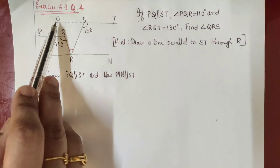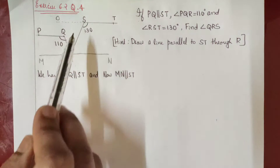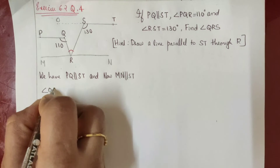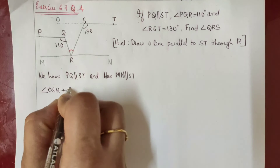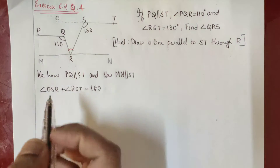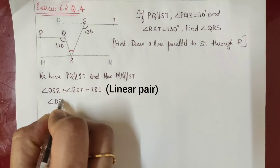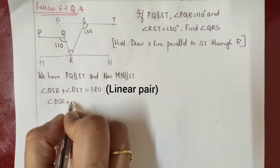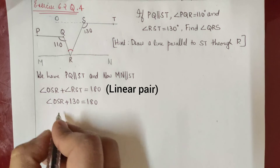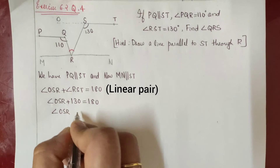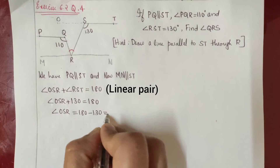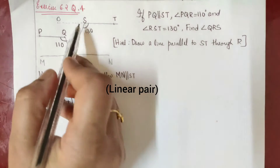The sum of angles OSR and RST will be equal to 180 degrees because they form a linear pair. So angle OSR plus angle RST equals 180 degrees. We get angle OSR plus 130 equals 180 degrees, so this angle is equal to 50 degrees.